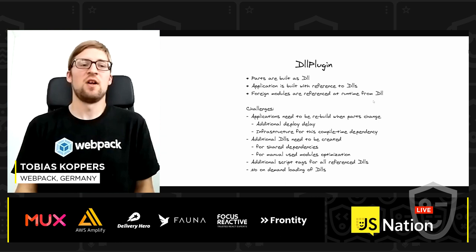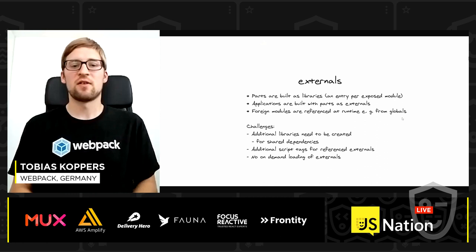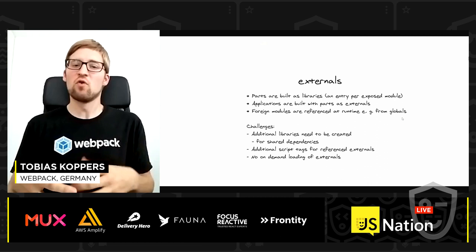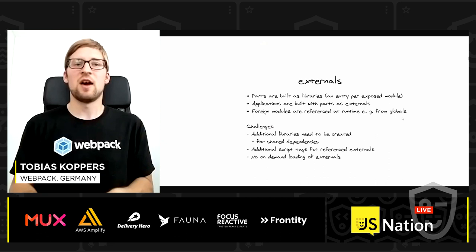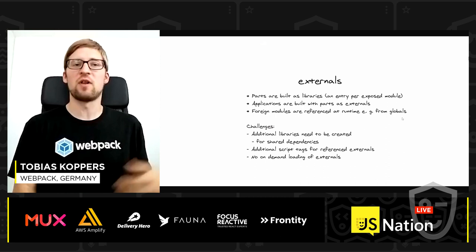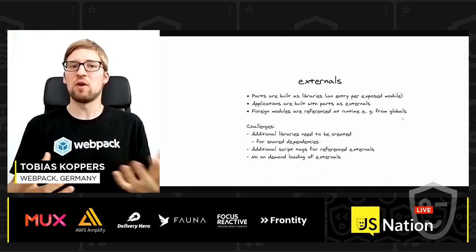An alternative is externals and building libraries. Each part is built as a library and consumed by other applications as externals, eliminating the compile-time dependency between parts. Other modules can be consumed from the library at runtime. But the challenge about sharing libraries remains — each shared library must be extracted into a separate build process and referenced as an external in consuming applications.